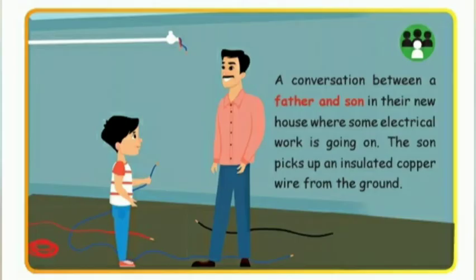There is a conversation between a father and son as they move to a new house. In their new house, some electrical work is going on. The son picks up an insulated copper wire from the ground, and a conversation begins explaining each and every material. We get these materials from different resources.